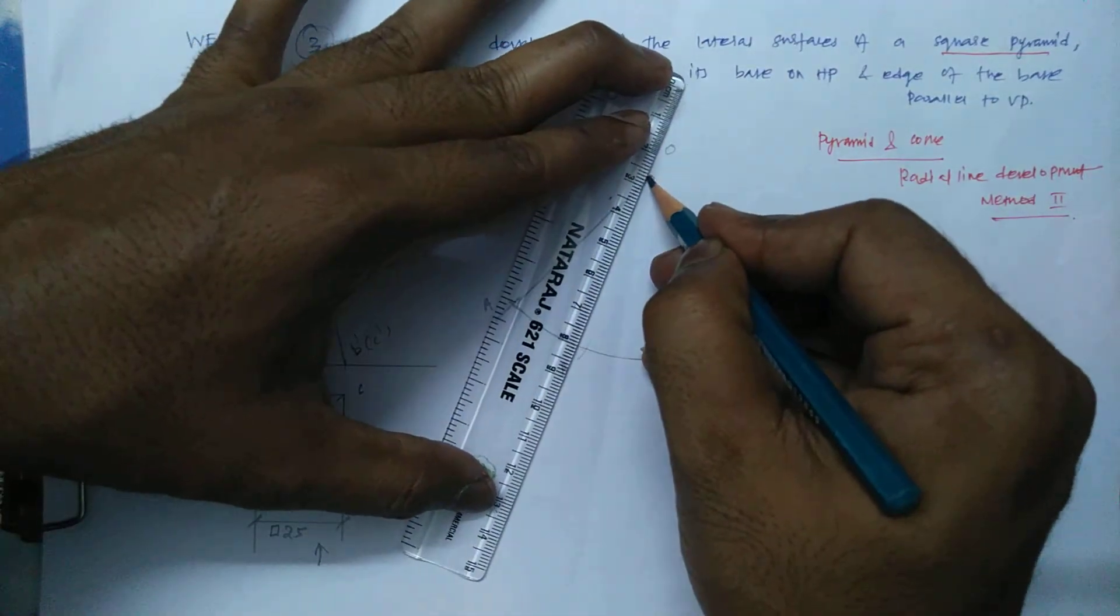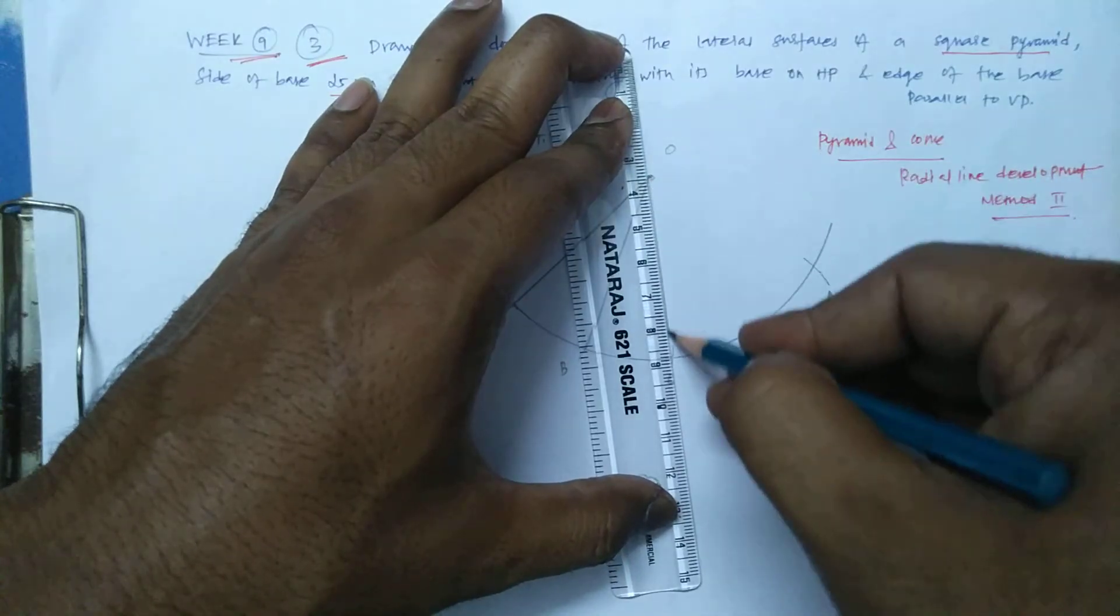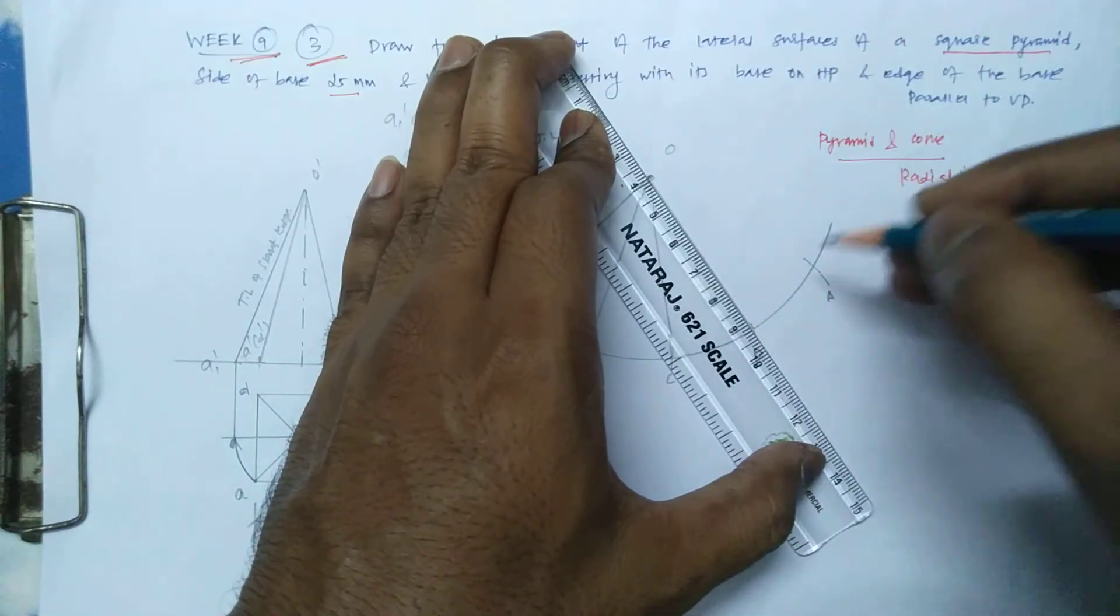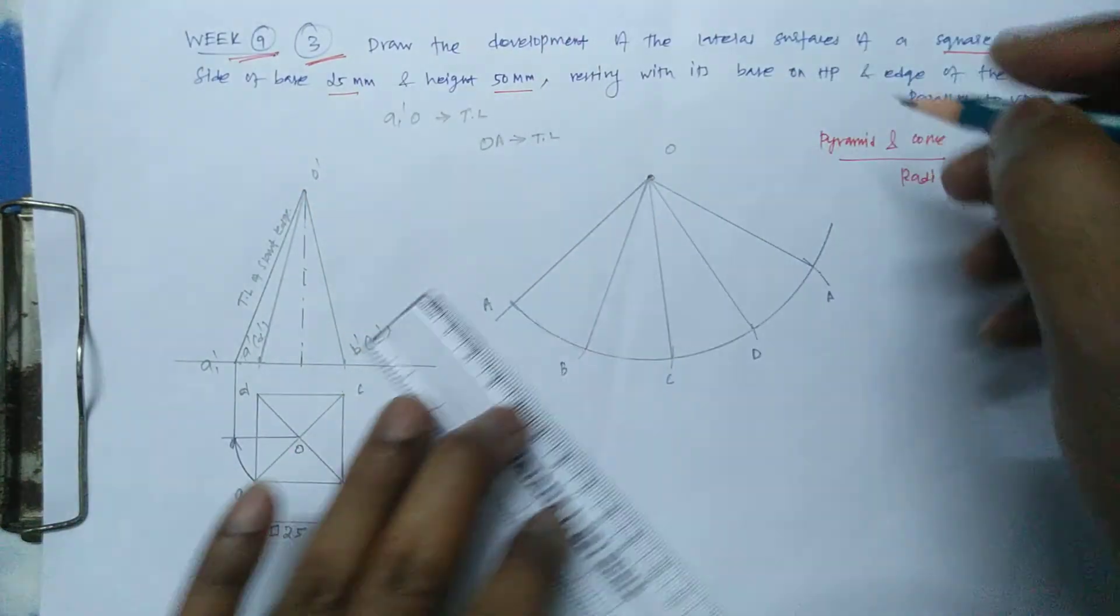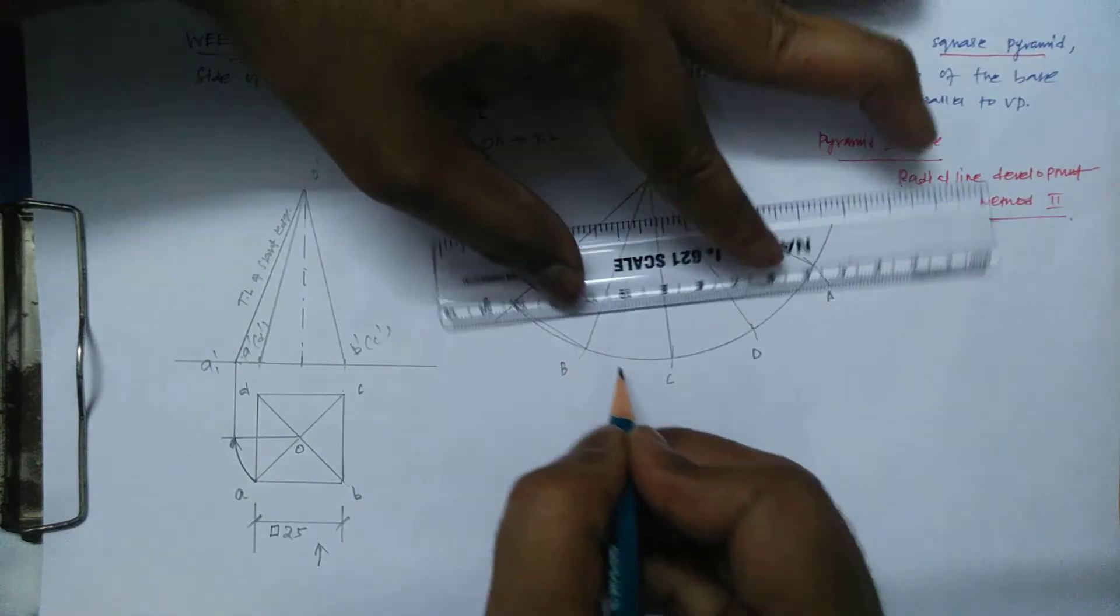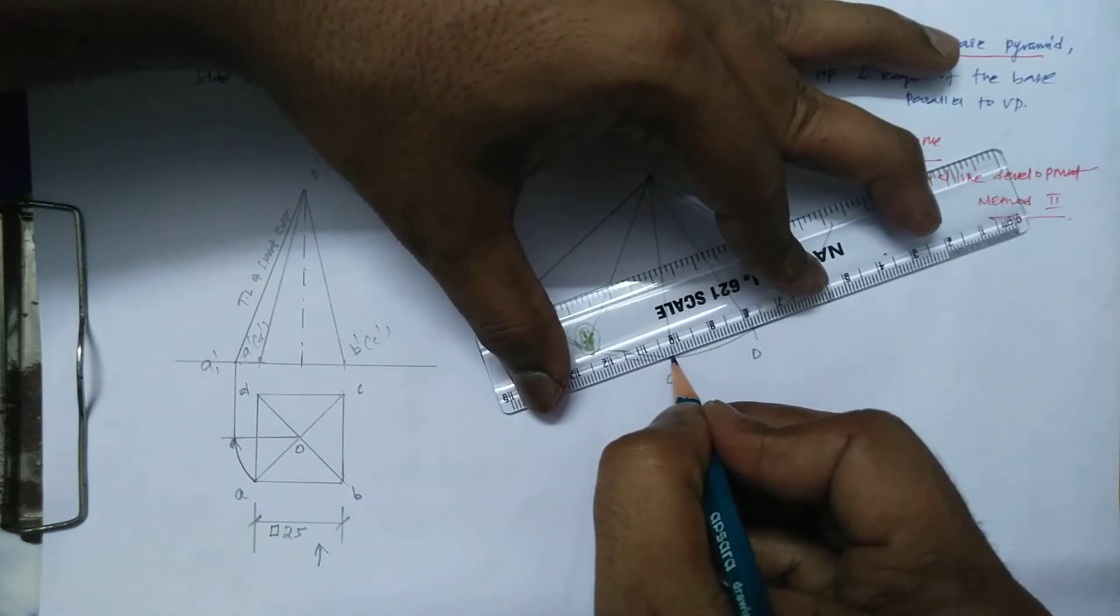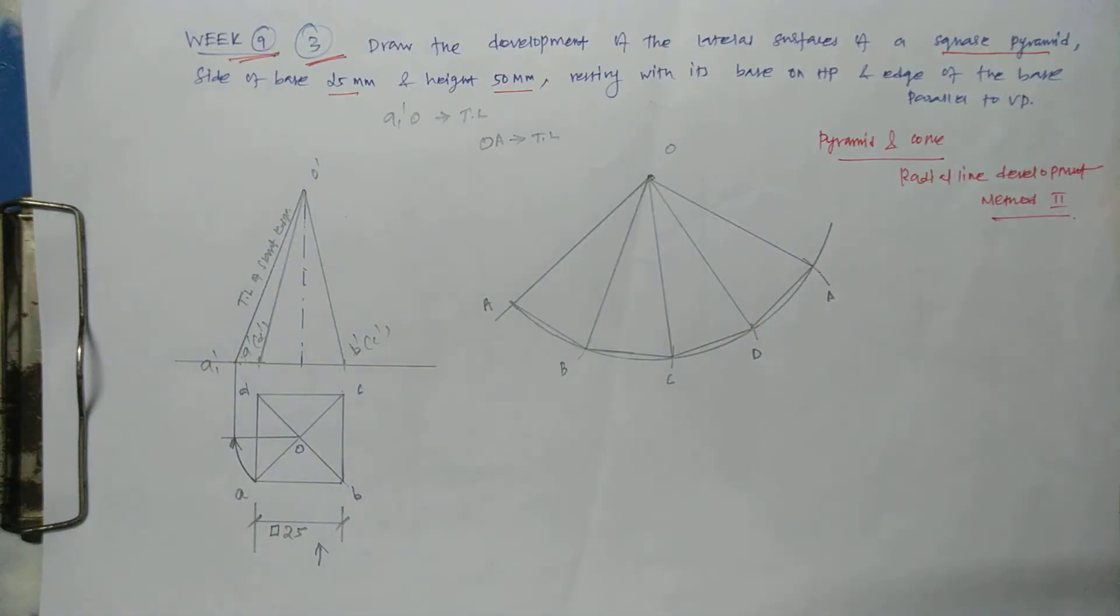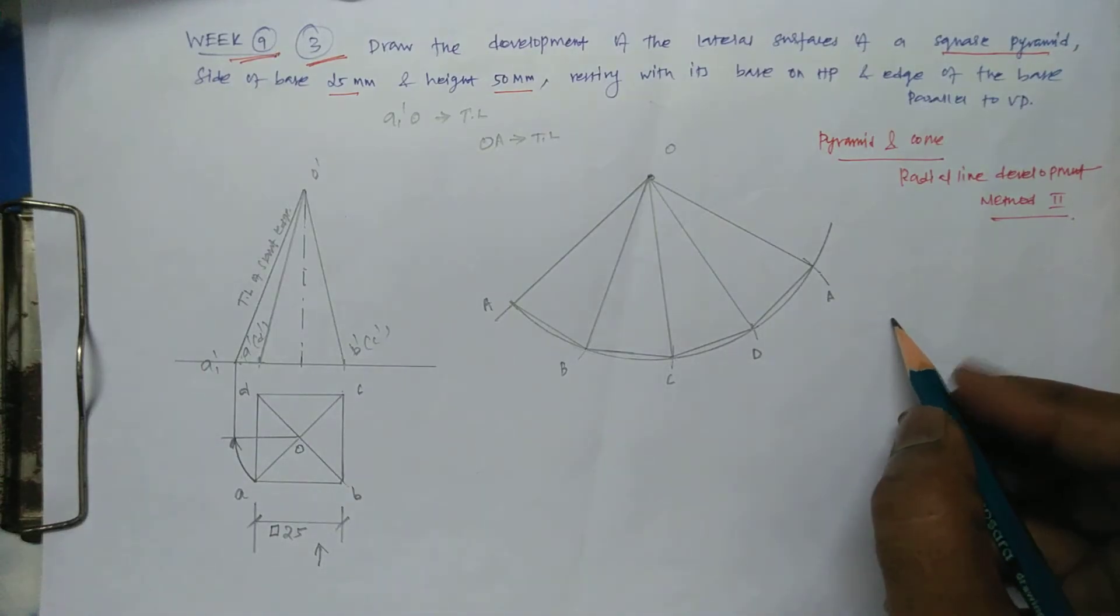Connect those points to the apex. After that, you connect by a linear line to those edges because it is not curved. Edges are not curved. So these are all 25mm. So this is considered radial line development.